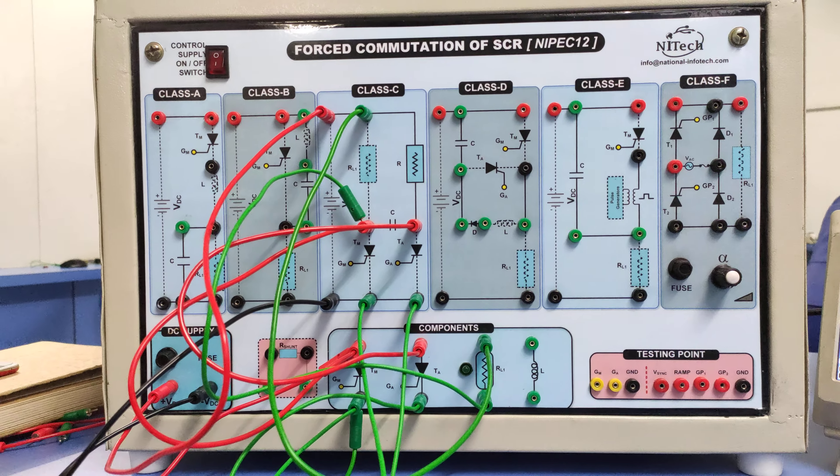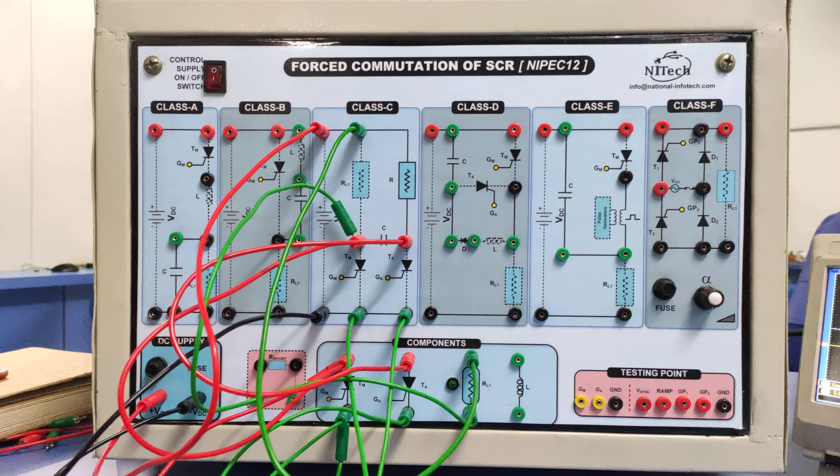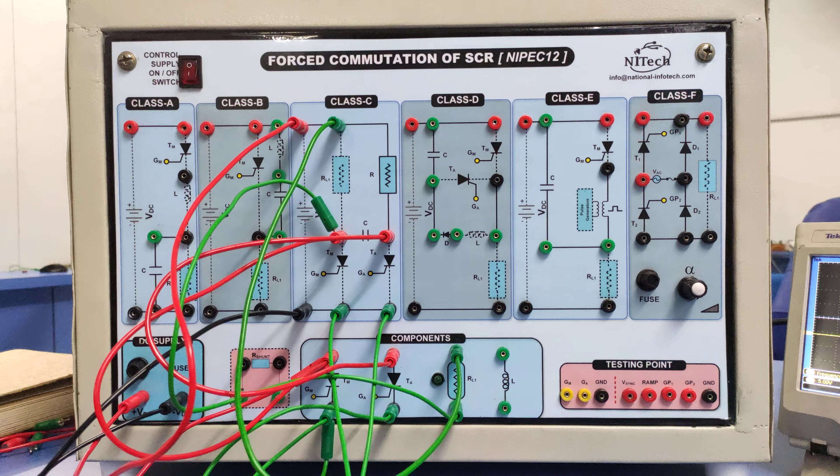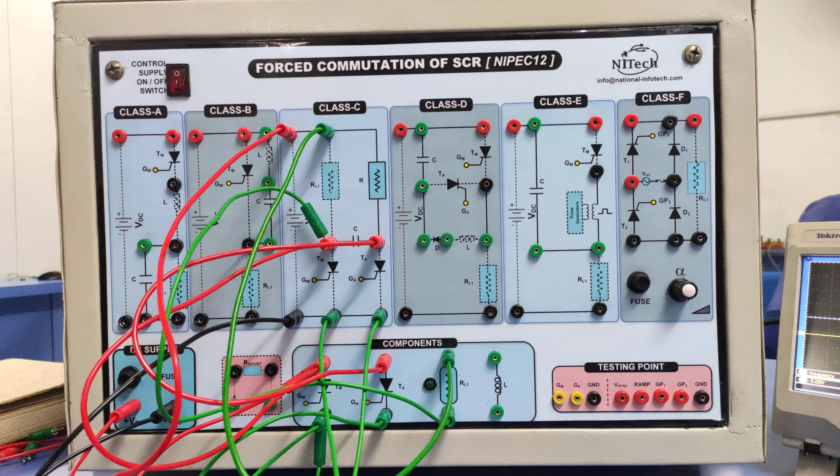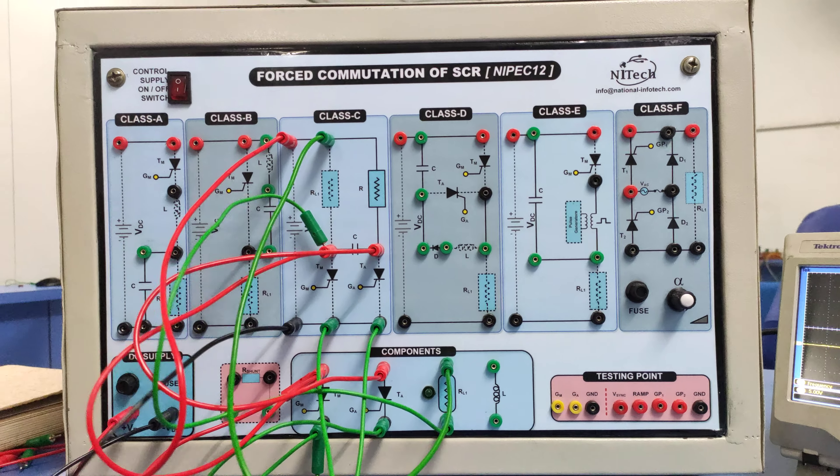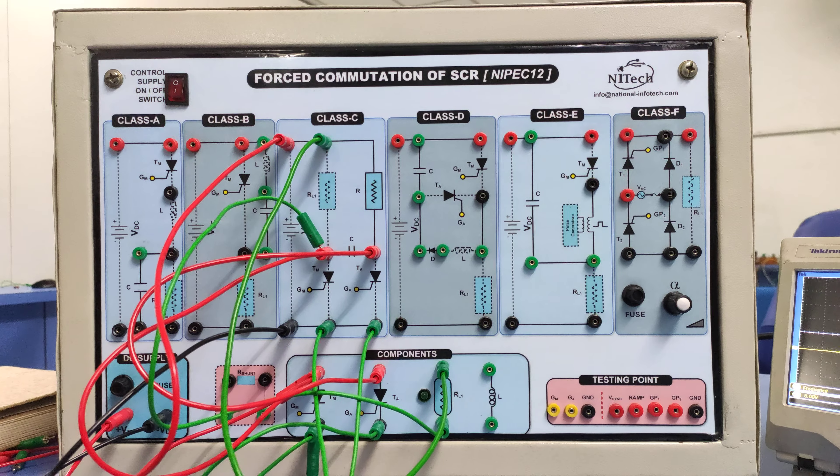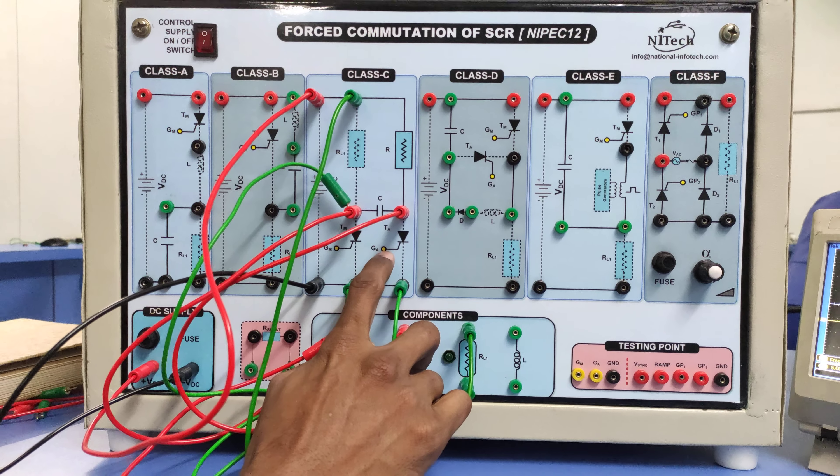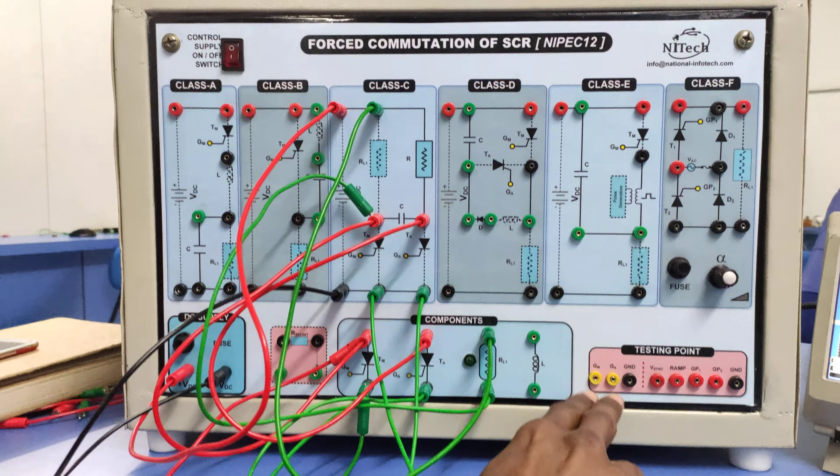So we will be getting the two thyristors at 180 degrees apart. This means if you are energizing the TM main thyristor at zero degrees, we will energize the auxiliary thyristor at 180 degrees. Those gate pulses we can see simultaneously with respect to this ground on the DSO.